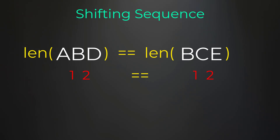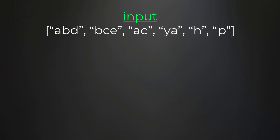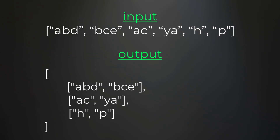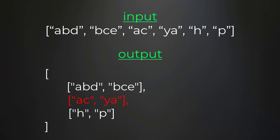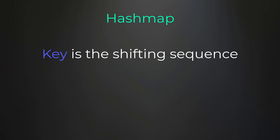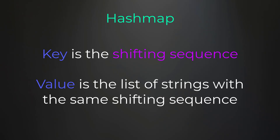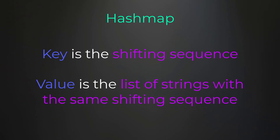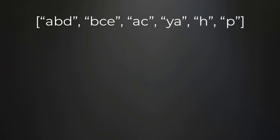Both strings had the same shifting sequence of one then two. After we determine the shifting sequence for every string in our list, our output should be: abd grouped with bce, ac grouped with ya, and h grouped with p. To group these strings efficiently by their shifting sequence, we're going to need a hash map. The key in our hash map is going to be the shifting sequence and the value is going to be a list of strings that match that shifting sequence.